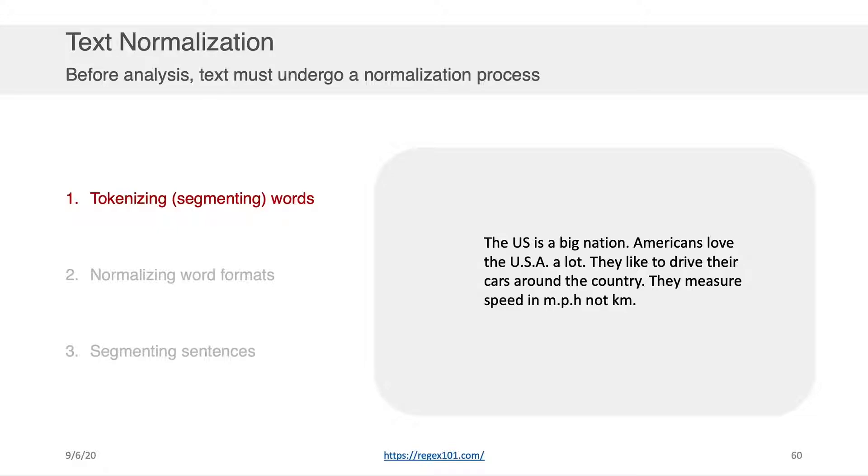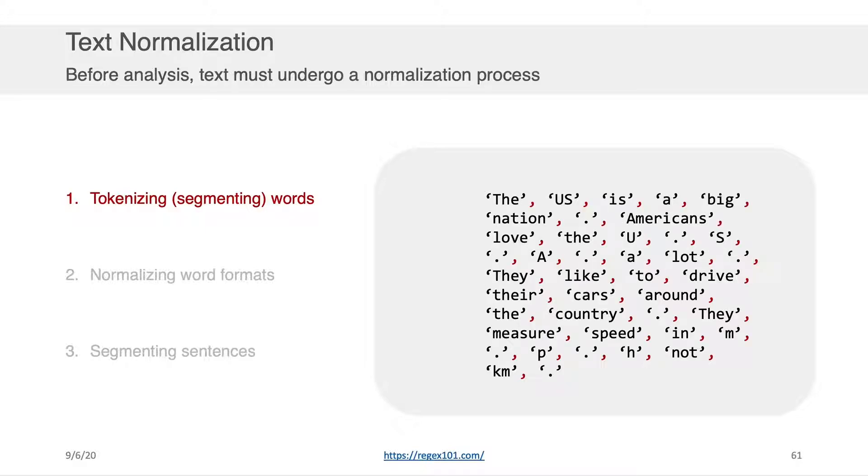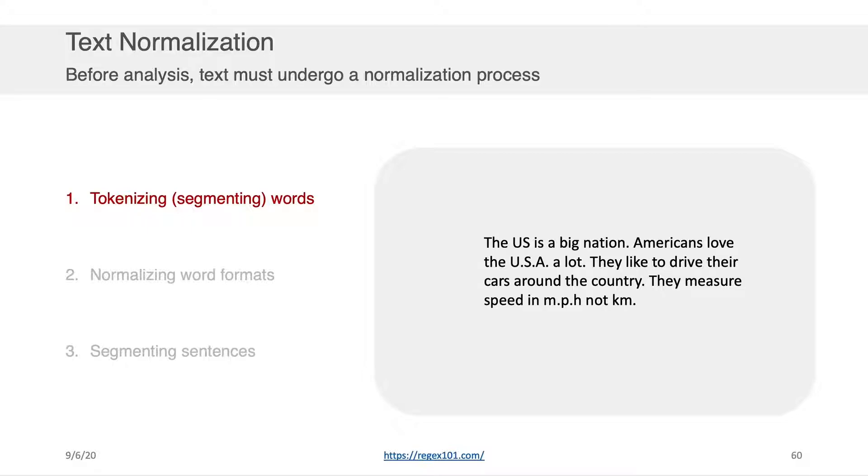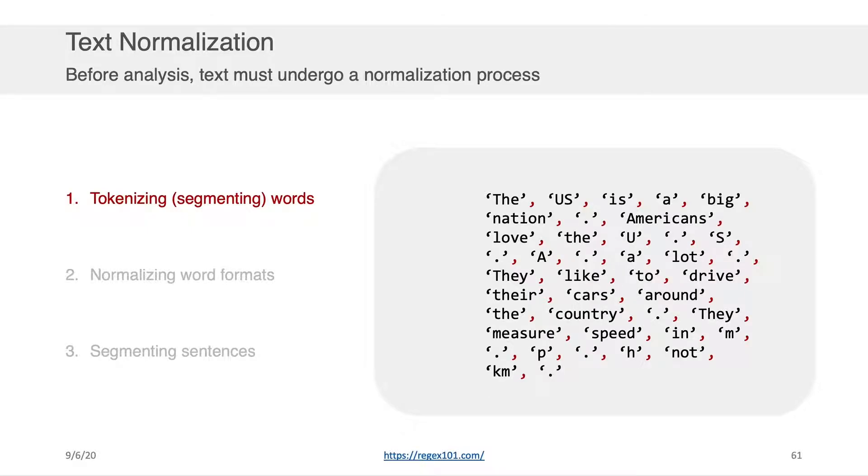Let's assume that we have the following text. The U.S. is a big nation. Americans love the U.S. a lot. They like to drive their cars around the country. They measure speed in MPH, not KM. Well, if we were to perform a tokenization operation on this, we'd be transforming the text from this representation to this representation. And what you can see here is we've just taken each of the words that was within that text block and we've broken them out into their individual words in a comma separated list.